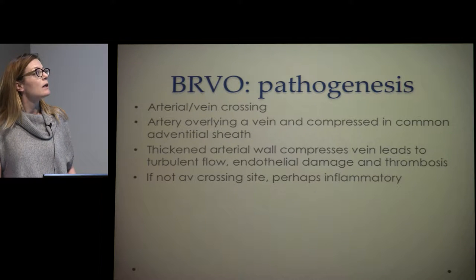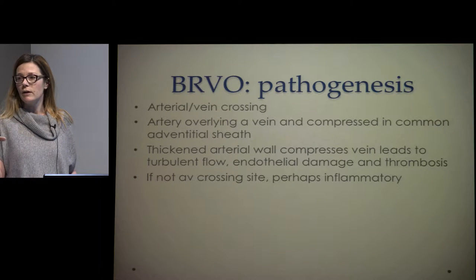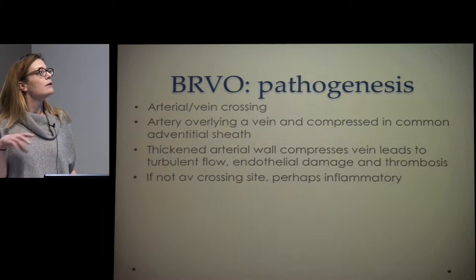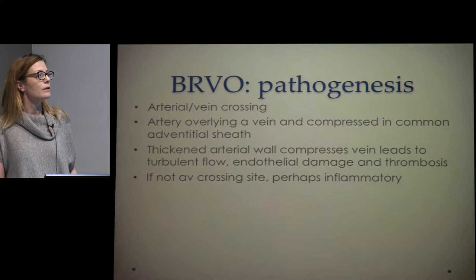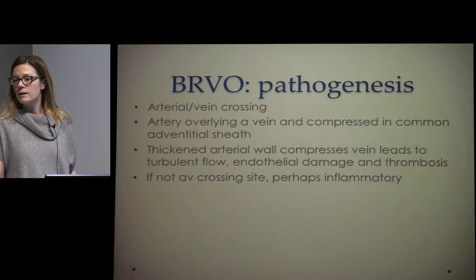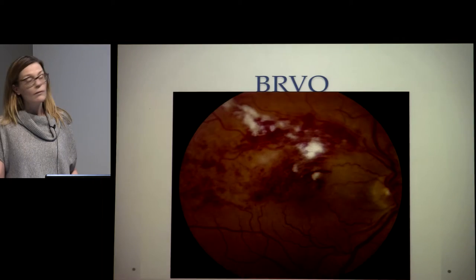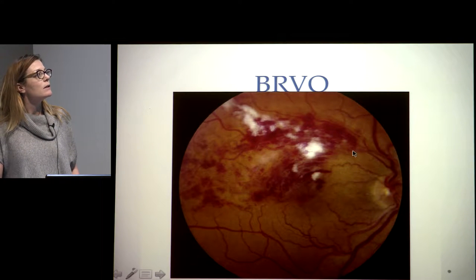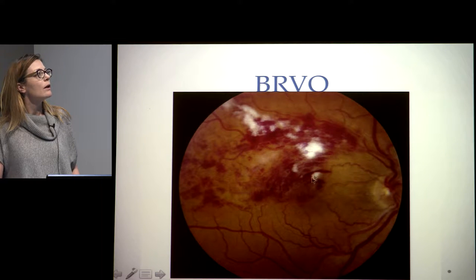A branch vein occlusion is caused by compression of a vein by an artery in their common adventitial sheath. Usually the artery is laying on top of the vein, and that compression leads to a thickened arterial wall compressing the vein, causing turbulent flow, endothelial damage, and thrombosis. If you don't see it at an AV crossing site, you want to consider an inflammatory cause. The typical fundus appearance shows compression at the AV crossing site with downstream intraretinal hemorrhages, cotton wool spots, and significant macular edema.